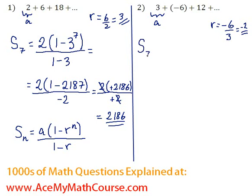And again, I want to know s seven, the sum of the first seven terms. Here we're going to have three times one minus negative two to the power.